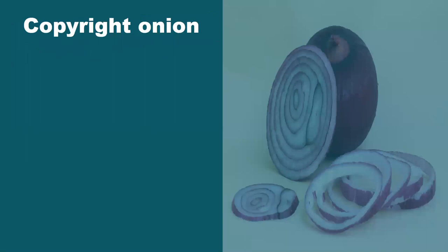Copyright is often described as being a bit like an onion — it contains a lot of layers and it often makes you cry. However, all joking aside, it's important to think about the different layers in any one copyright item as this can impact what you're allowed to use it for. Each item has different layers of copyright in its many elements, so for example a book will contain copyright in the text, any illustrations or graphs, the cover image, and even the typography.